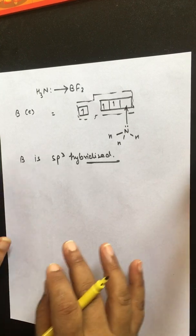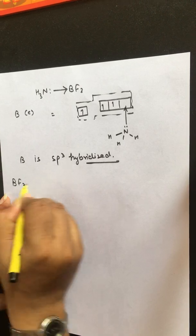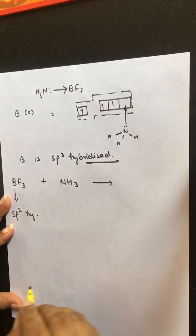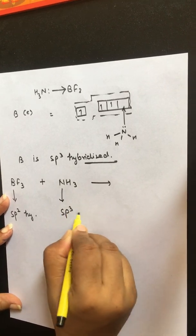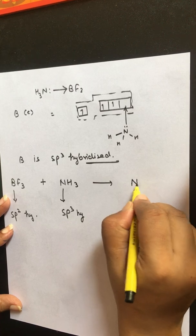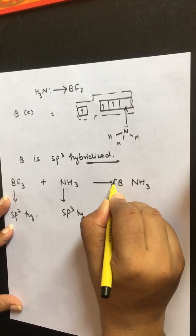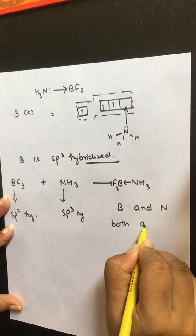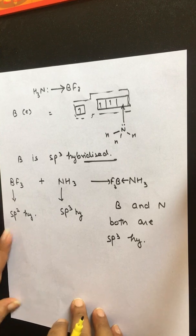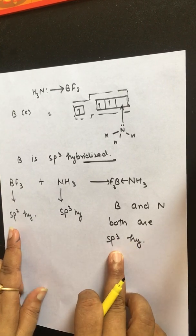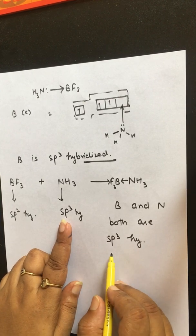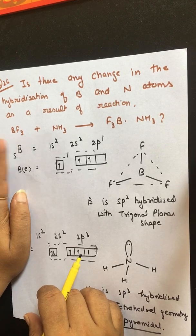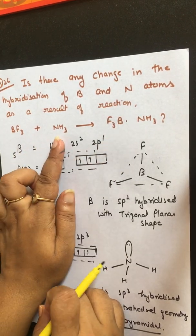Boron is now sp³ hybridized with tetrahedral shape and geometry. In summary, before the reaction boron in BF₃ was sp² hybridized with trigonal planar shape, and nitrogen in NH₃ was sp³ hybridized with pyramidal shape. After the reaction, both boron and nitrogen are sp³ hybridized. So boron hybridization changes from sp² to sp³, but nitrogen hybridization remains the same — sp³ to sp³. The answer is: yes, there is a change in hybridization of boron from sp² to sp³, but nitrogen hybridization remains the same.